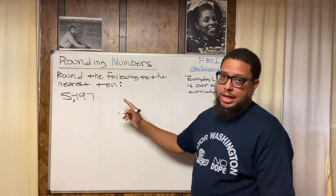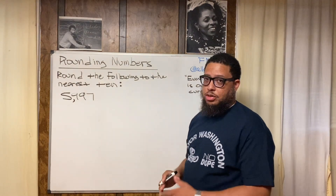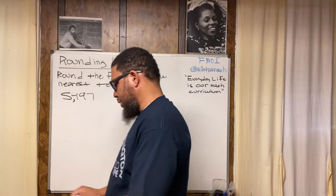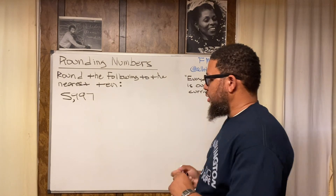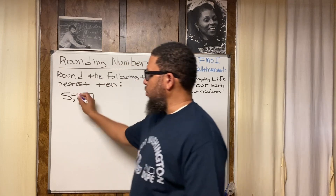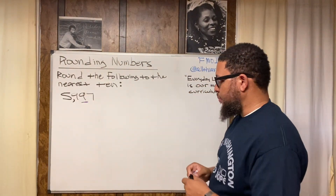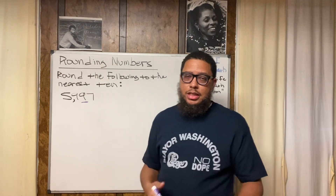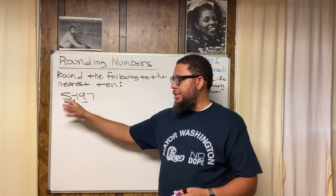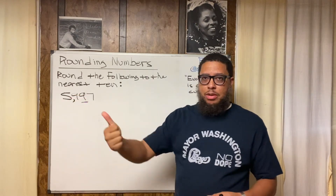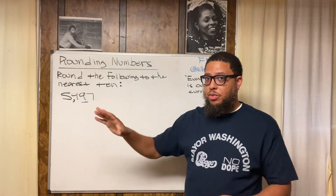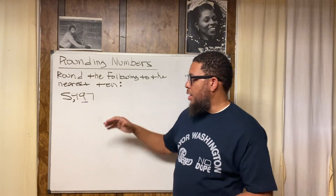We want to round 5,997 to the nearest ten, so we first identify the digit in the tens place — this nine right here. Don't confuse the two nines: one nine is in the tens place, the other is in the hundreds place. I'm going to do this problem three different ways: using the algorithm or rules for rounding, then a number line, then a rounding hill. We'll get the same answer all three ways.